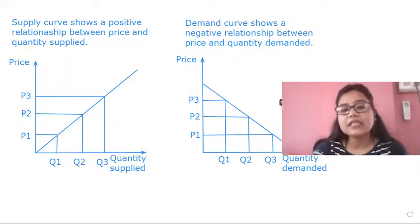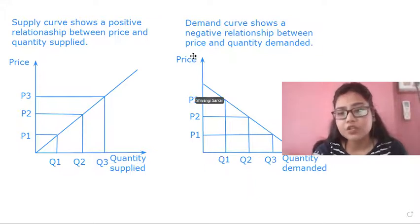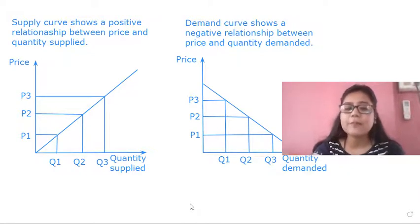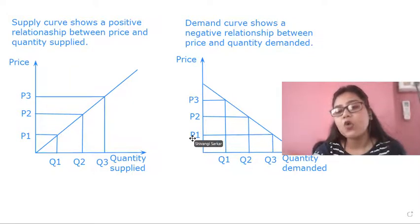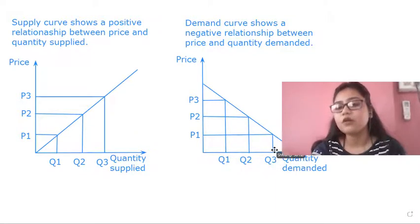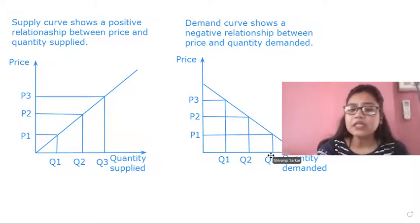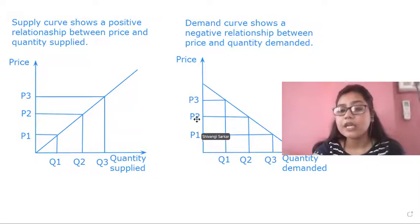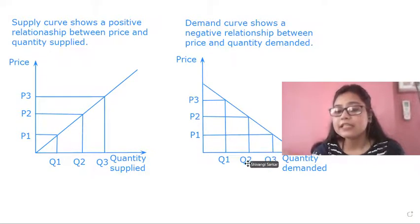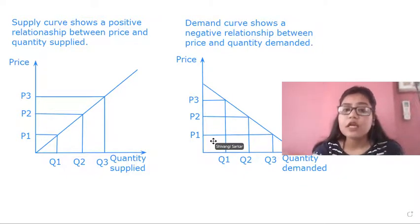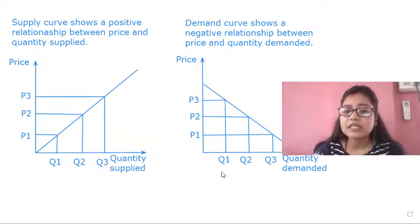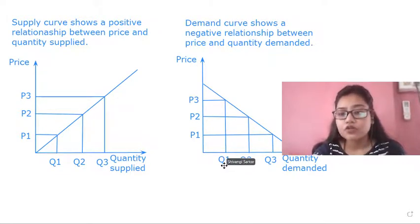What is demand? If we see this diagram on the right-hand side, where we have plotted price on the vertical axis and quantity demanded on the horizontal axis, we see that for any particular commodity or good, when the price is at P1, the quantity demanded is at Q3. Similarly, if the price increases to P2, there is a decline in the quantity demanded from Q3 to Q2. If the price increases further to P3, the quantity demanded declines more to Q1.